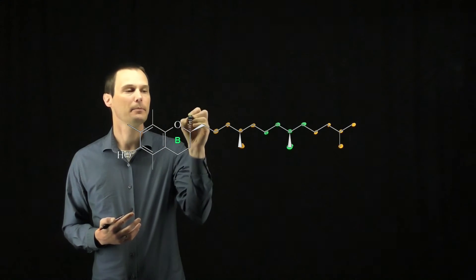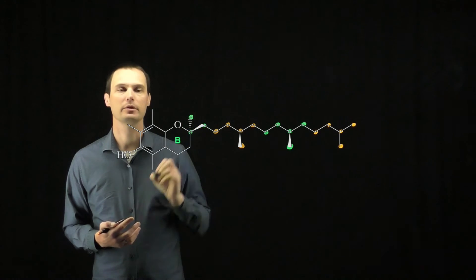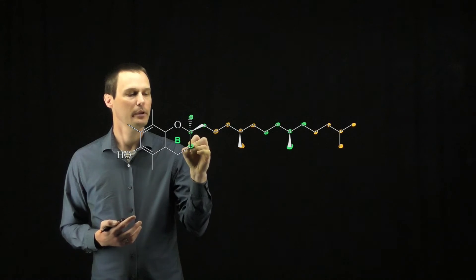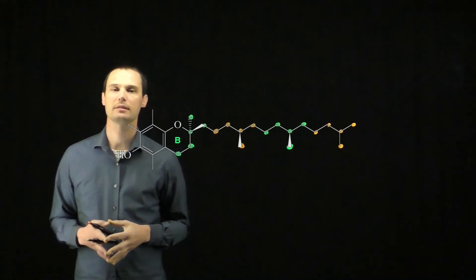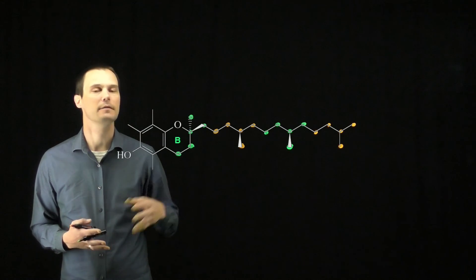And we have one more isoprene unit to find. Here is the methyl group. Those two carbons are attached to this carbon. Then we have two more carbons to finish out this isoprene unit. These are the four isoprene units that we can identify in vitamin E.